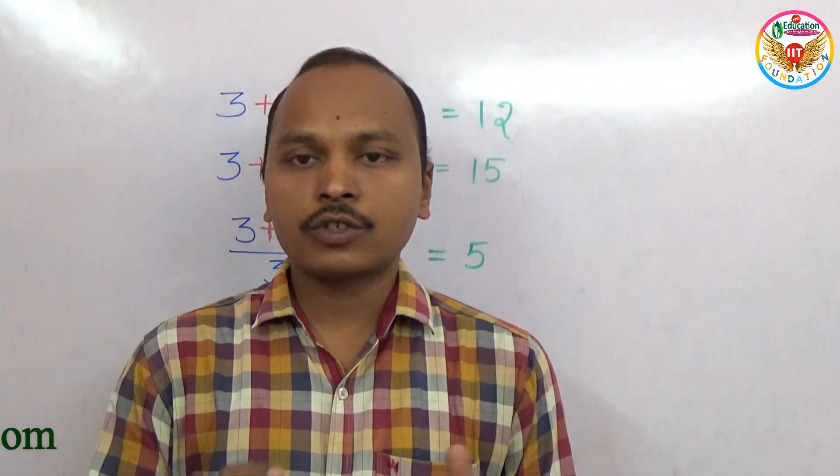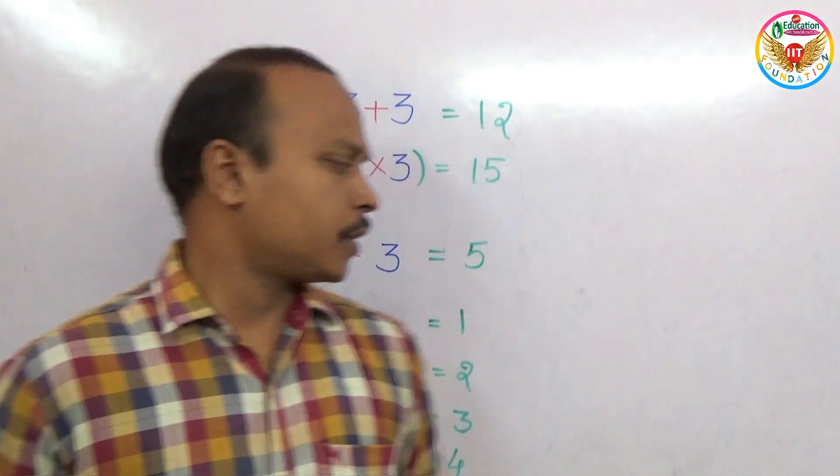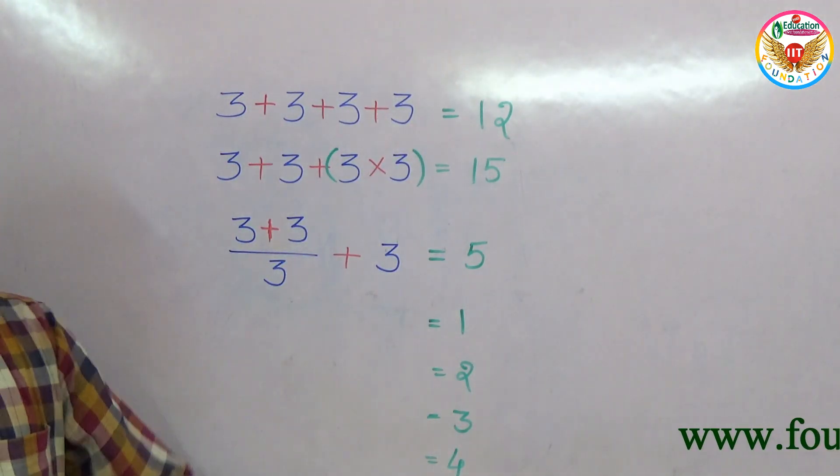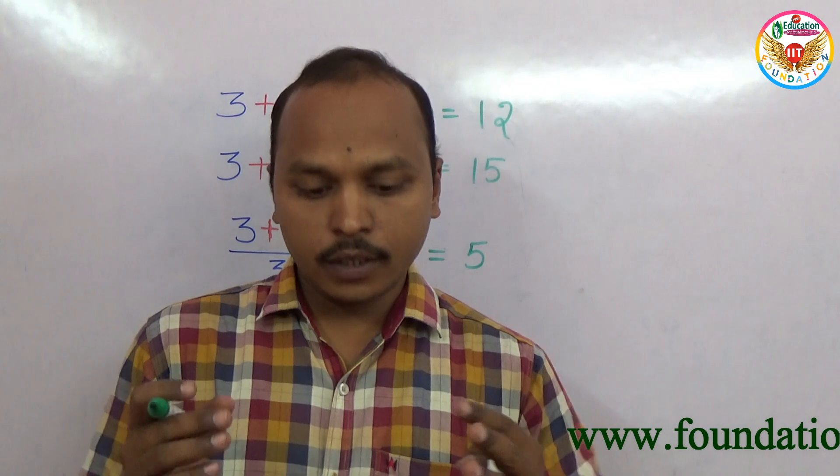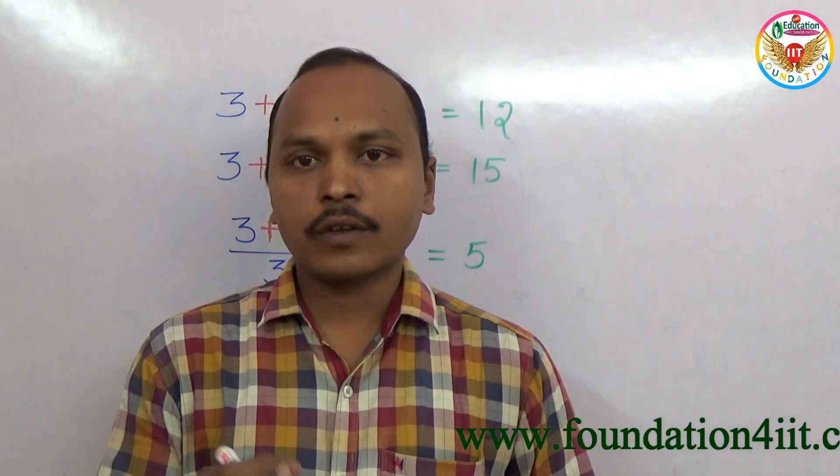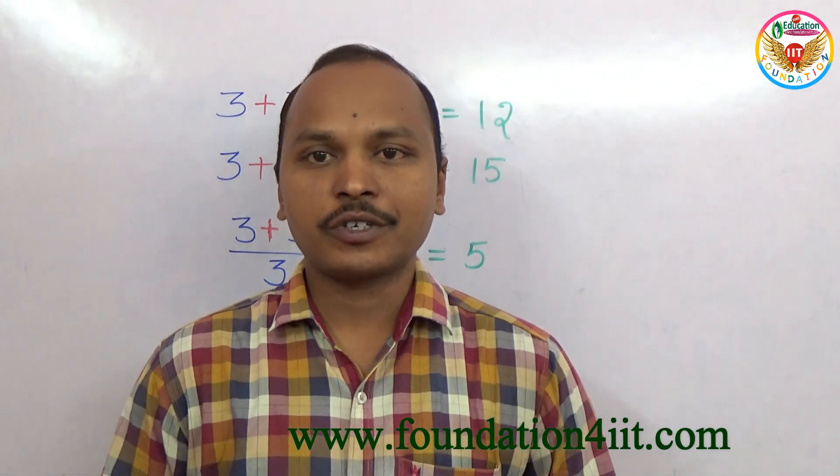Using four threes, you must use four threes, use any mathematical operation and you should get equal to 1, 2, 3, different numbers. You can pause the video and try, otherwise you can continue for solution.